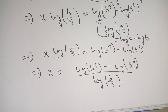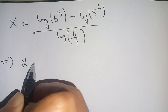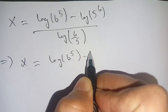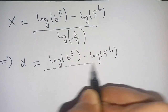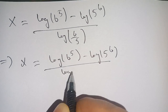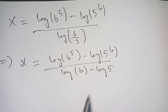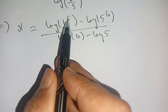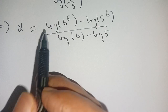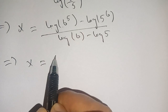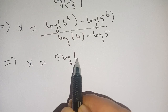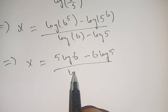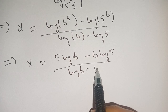Our equation becomes x = [log(6^5) minus log(5^6)] divided by [log(6) minus log(5)]. For more simplification we use the identity log(a^x) = x·log(a). We get x = [5·log(6) minus 6·log(5)] divided by [log(6) minus log(5)]. This is the final solution of this equation.